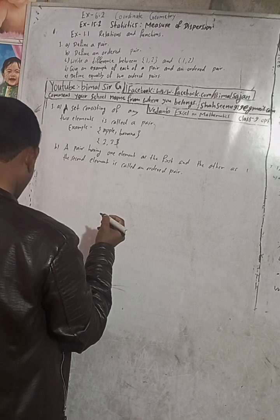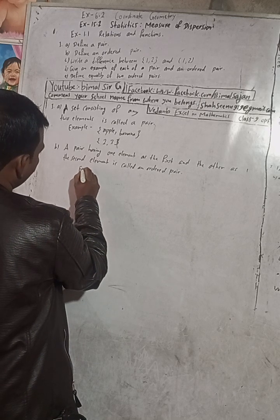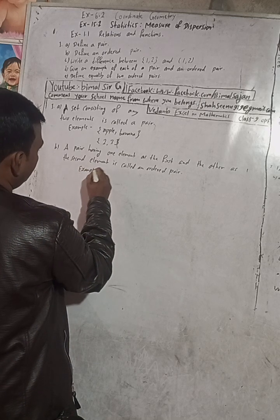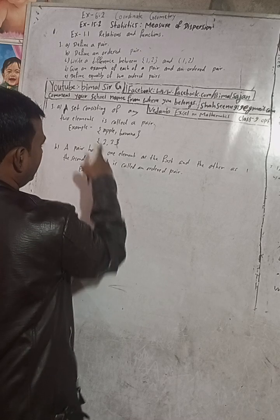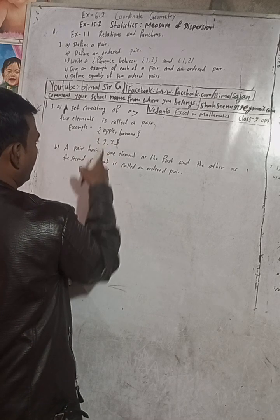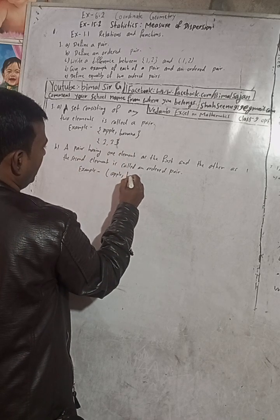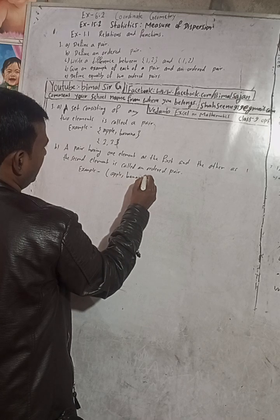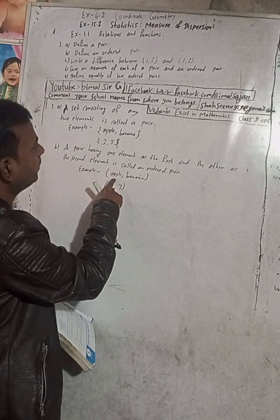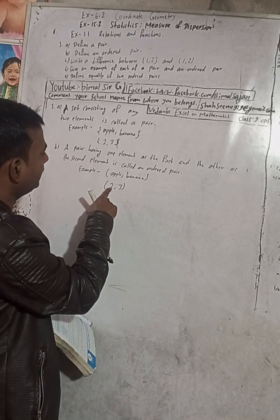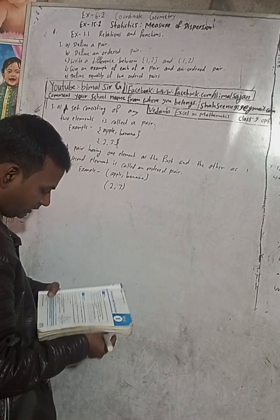You can write one example. For example, (apple, banana) — this is written in small brackets, not curly brackets. Another example: (2, 3), where 2 is the first element and 3 is the second element. So, a pair having one element as the first and the other as the second element is called an ordered pair. Note that (apple, banana) will not be equal to (banana, apple).